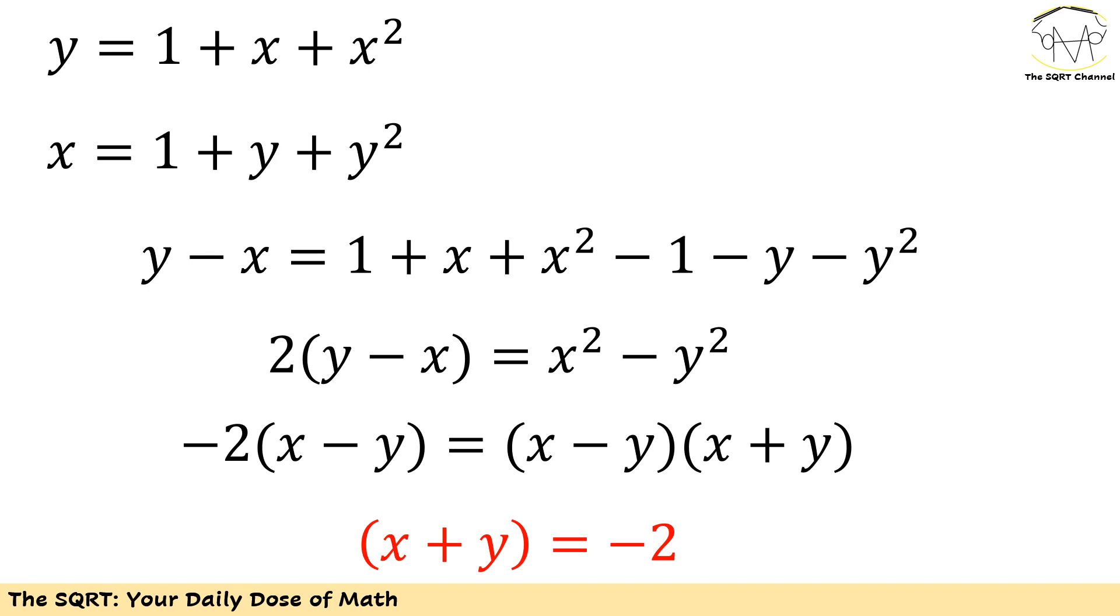Adding these together, if we apply some simplification you can remove 1 minus 1. We will have negative 2 times x minus y equals x squared minus y squared.